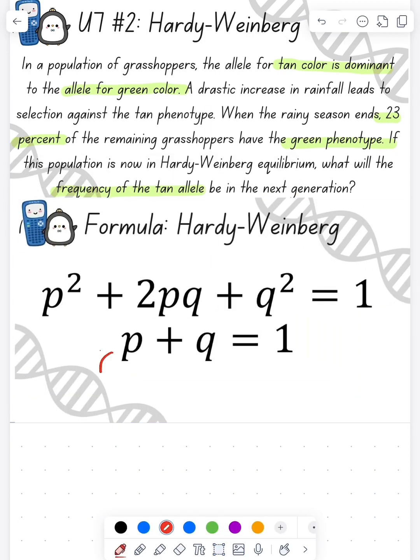So here we see our Hardy-Weinberg Equilibrium equation. The dominant allele is p, so that's going to be our tan allele. The recessive allele is going to be our green, so that's our q. If we have two of the dominant alleles, that's our p squared. If we're heterozygous, that's our 2pq. And if we're homozygous recessive, then that's q squared.